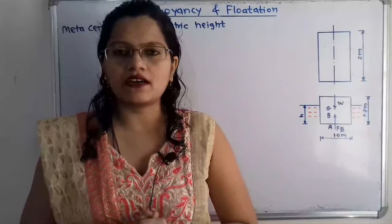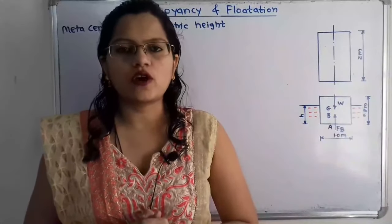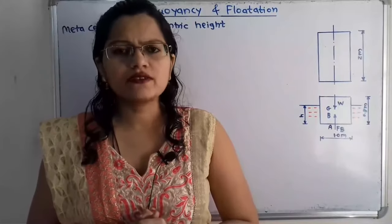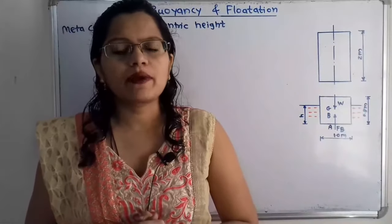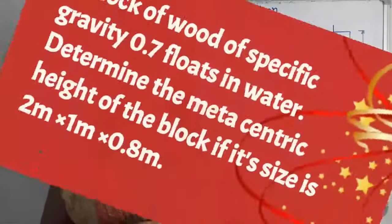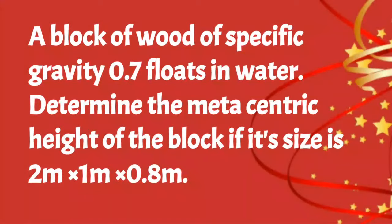Hello friends, this is Priyanka. Today we are going to solve a problem on buoyancy and floatation. We are going to find out the metacentric height of a wooden block. The given problem: a block of wood of specific gravity 0.7 floats in water — determine the metacentric height of the block if its size is 2 m × 1 m × 0.8 m.